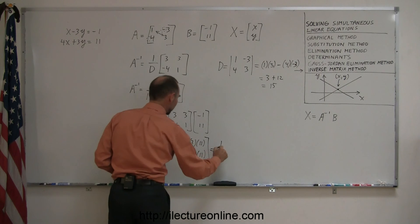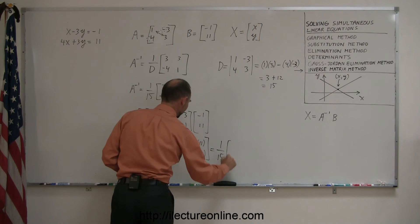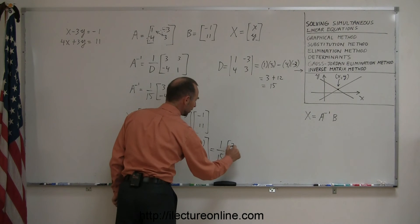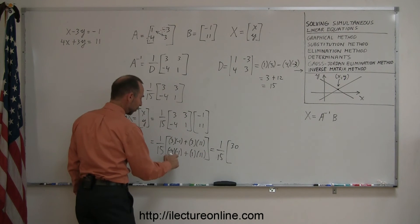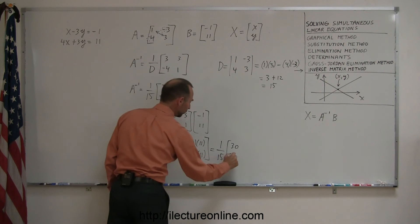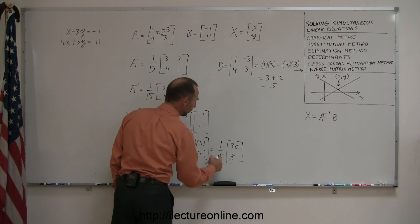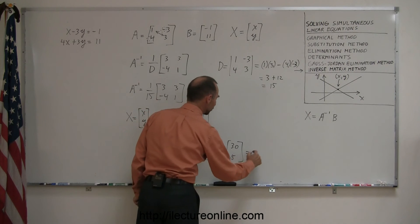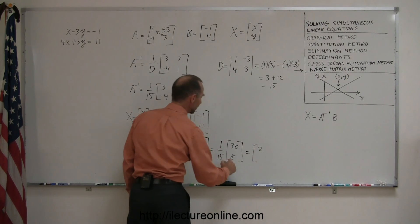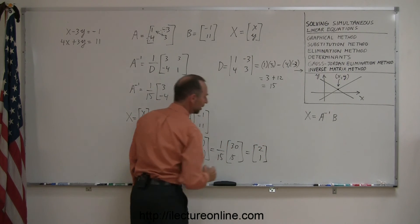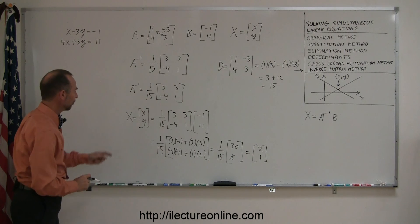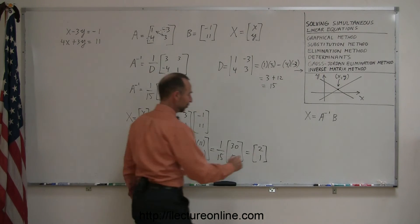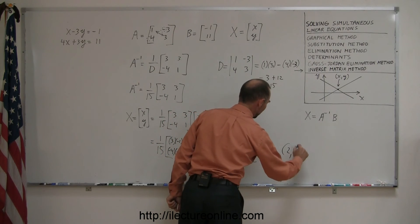So this is equal to 1 over 15 times: the first element is negative 3 plus 33, which is 30; and the second element is 4 plus 11, which is 15. Now we multiply 1 over 15 times each of those two: 30 divided by 15 is 2, and 15 divided by 15 is 1. Those are the x and y values of the place where the two lines cross. So our solution here is x equals 2 and y equals 1.